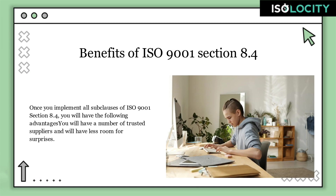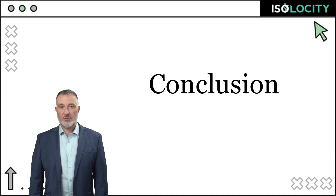Once you implement all sub-clauses of ISO 9001 Section 8.4, you will have the following advantages: you will have a number of trusted suppliers and will have less room for surprises. Because of all the control measures, the degree of error will be less, resulting in superior quality products and services. In case things go south, because you have everything documented, you will be able to safeguard yourself and your company from any financial or legal trouble. We hope you have enjoyed this article on ISO 9001 Section 8.4 — if you have any questions, feel free to reach out to us.